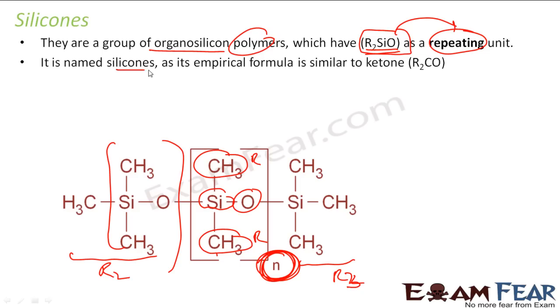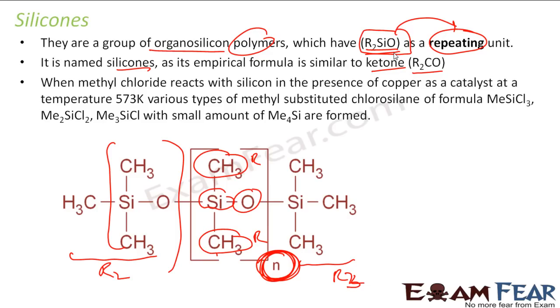Silicones are named silicones because their empirical formula is similar to ketones. Ketones have the formula R2CO, and since the empirical formula of silicones is similar to ketones, they are named silicones.